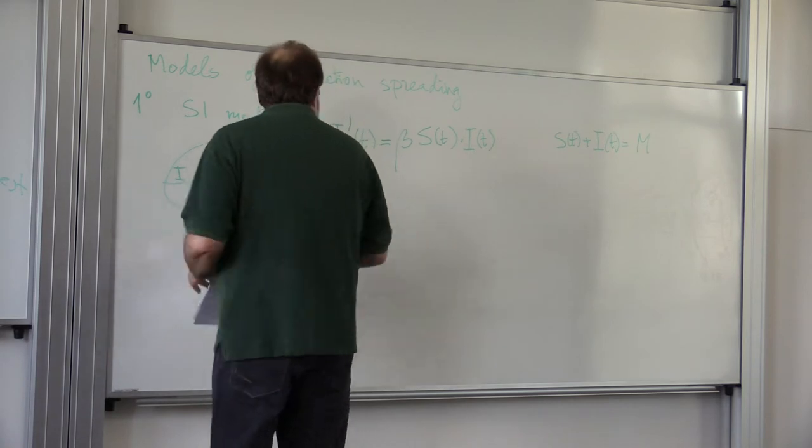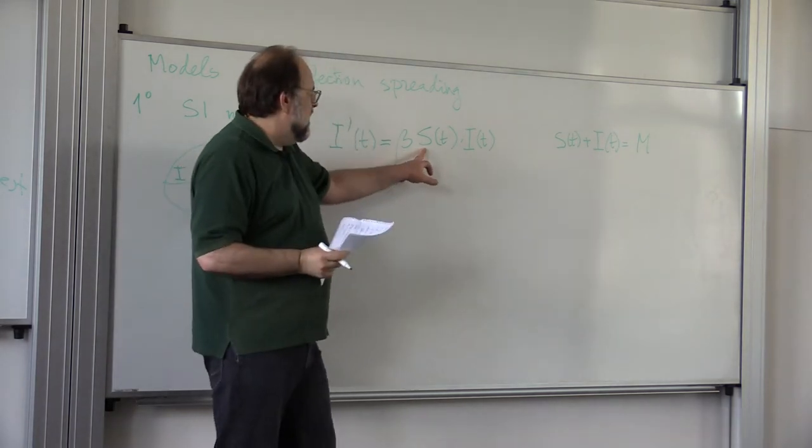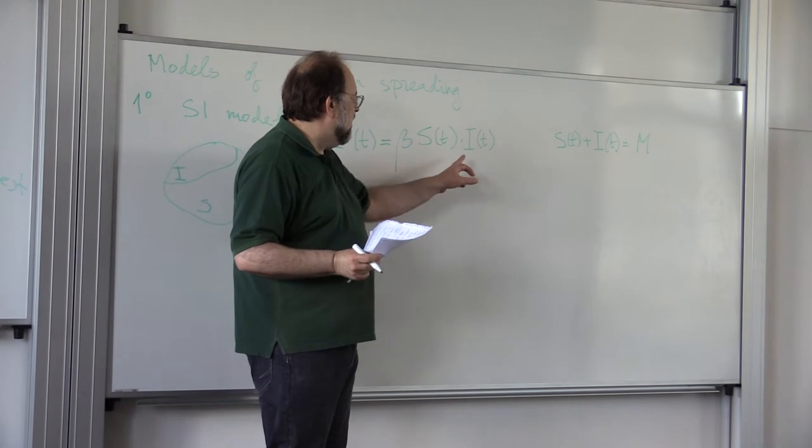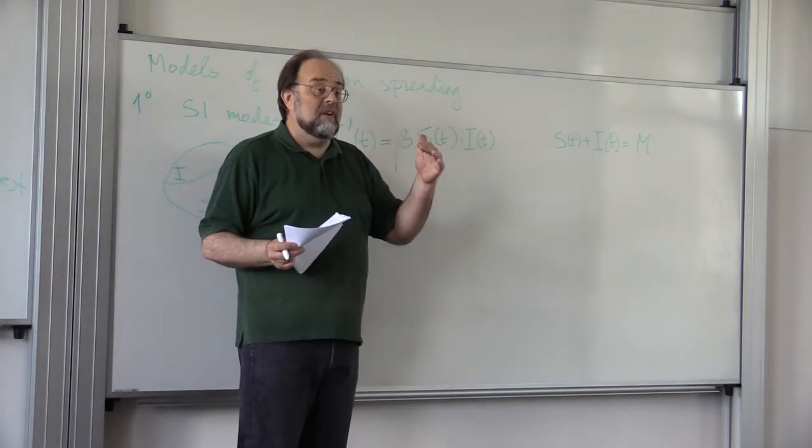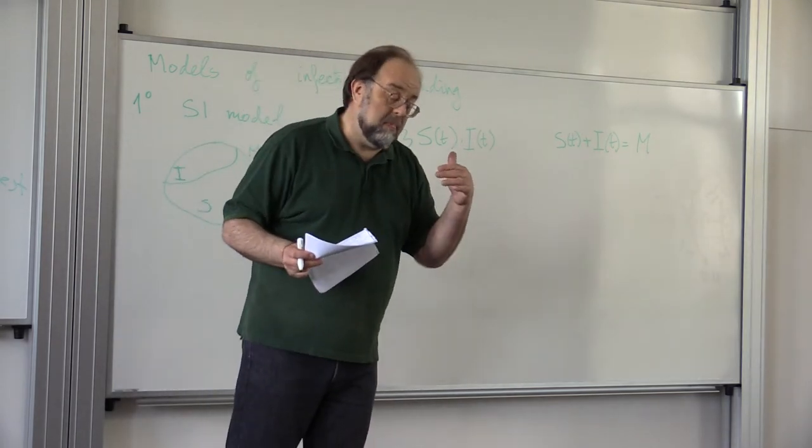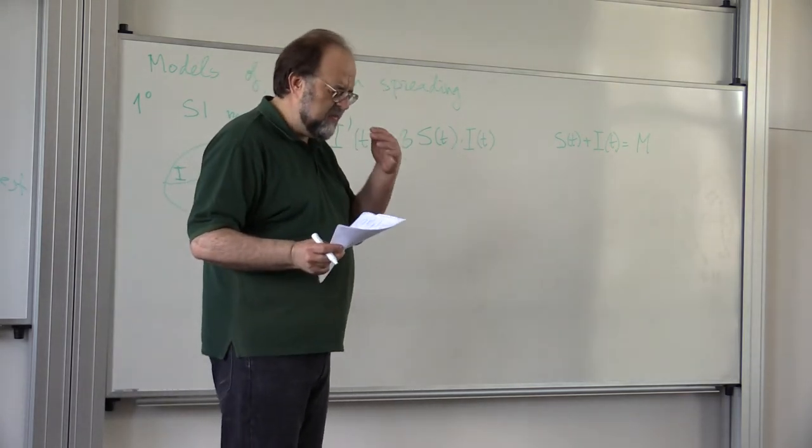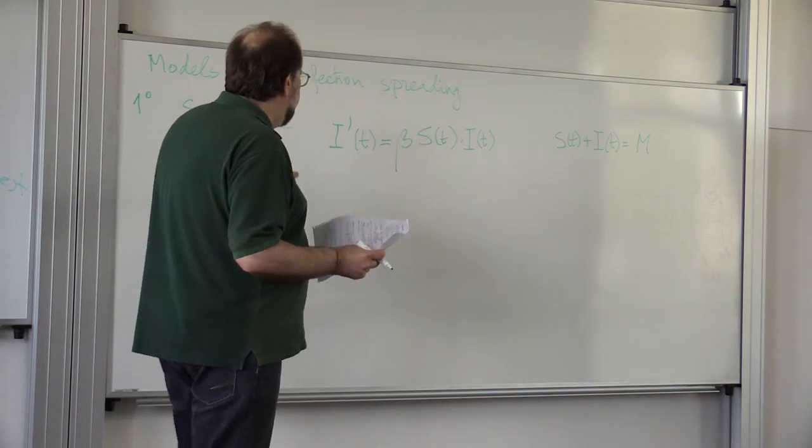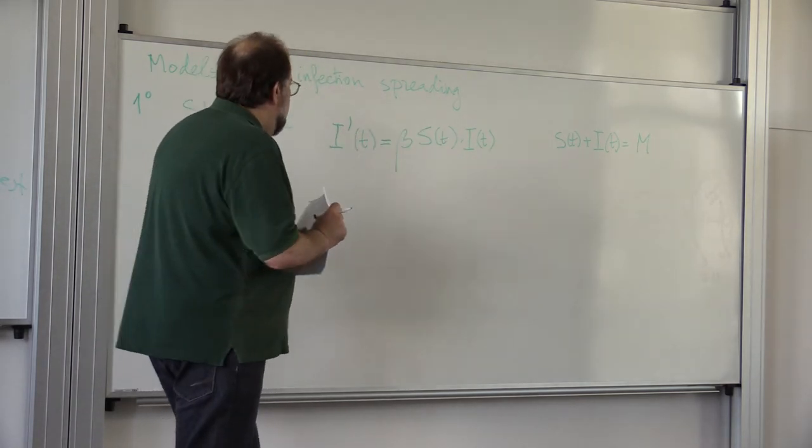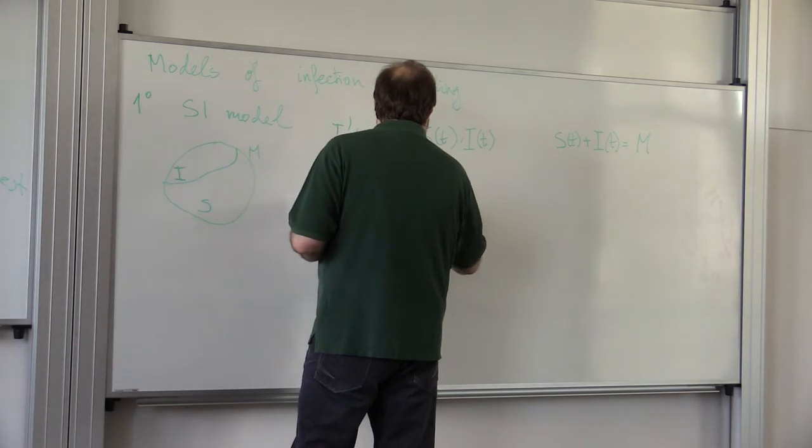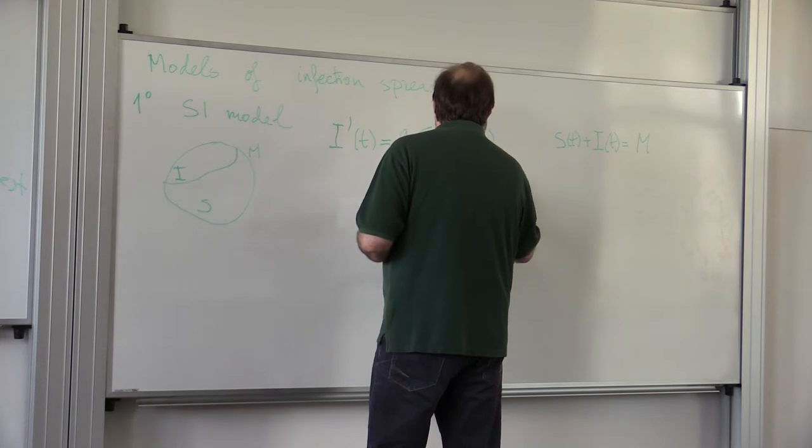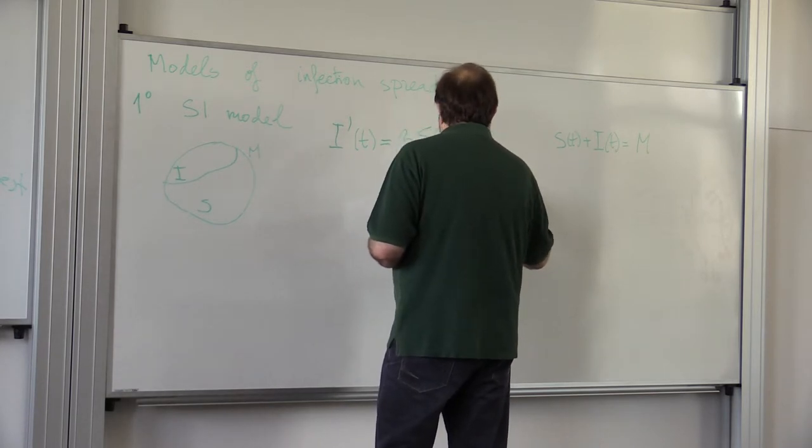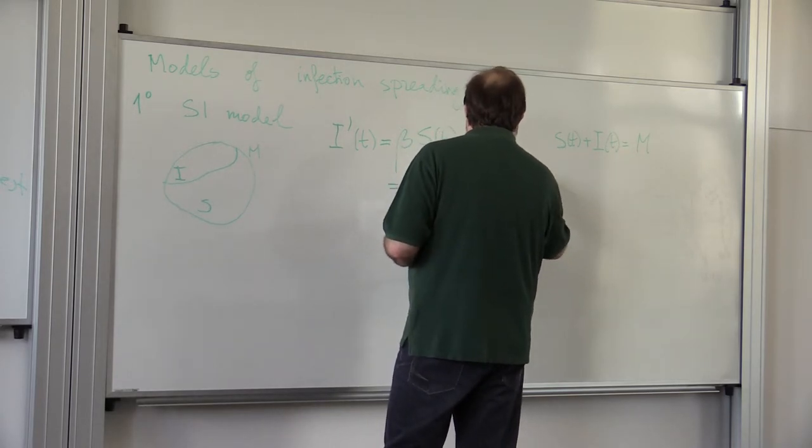With of course underlying assumption that S(t) plus I(t) is always kept constant, equal to the size of total population N. Sometimes this is normalized, so instead of number of susceptible and number of infected, you consider the fraction infected, the fraction of infected population. But it doesn't make a difference. This is equal to then beta times N minus I of t, because this is S, times I of t.